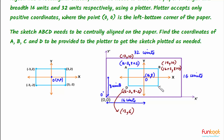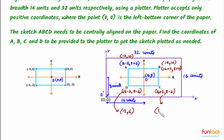Similarly for C, the original coordinates were (3, -2). So point C is 3 units to the right of the origin, so the X coordinate will be 16 plus 3, and the Y coordinate will be 8 minus 2. So C becomes (19, 6).